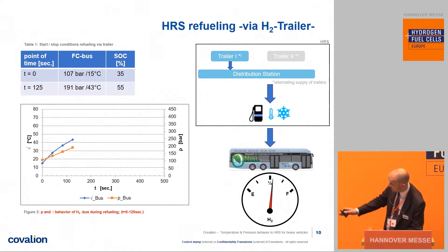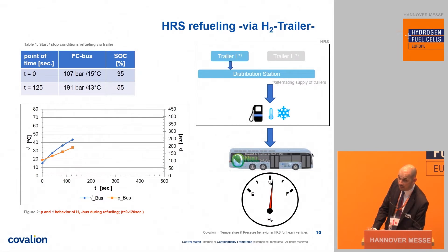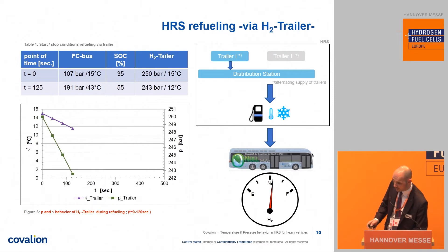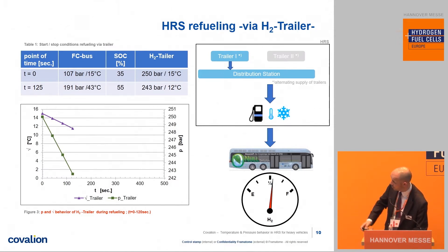You can now see the temperature and pressure behavior in the fuel cell bus. There is always a stop criterion — for example, pressure, temperature, or mass flow. After about 125 seconds, one of the stop criteria is reached, and the software again checks which is the most efficient way to continue refueling. Let's also look at the behavior in the H2 trailer — you can see the pressure and temperature drop in the trailer during the refueling of the bus.